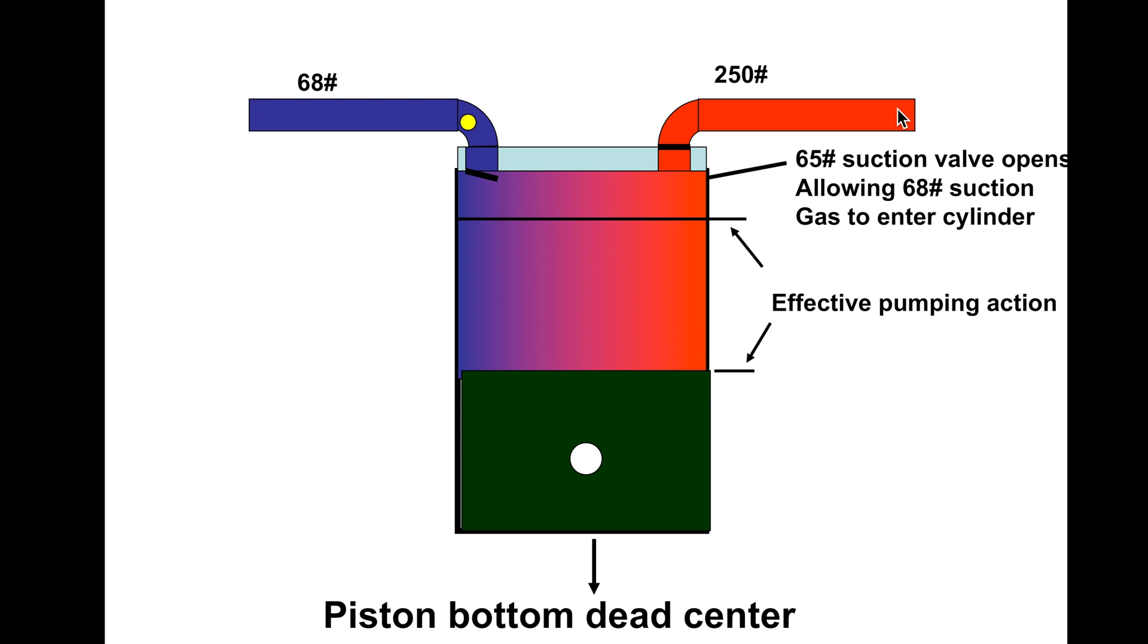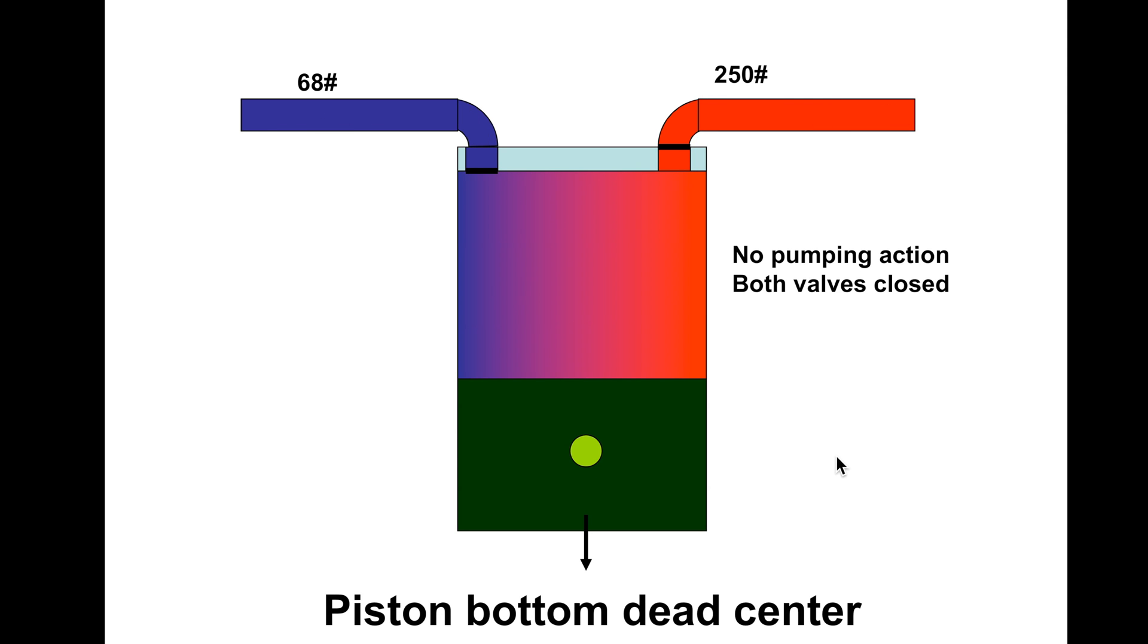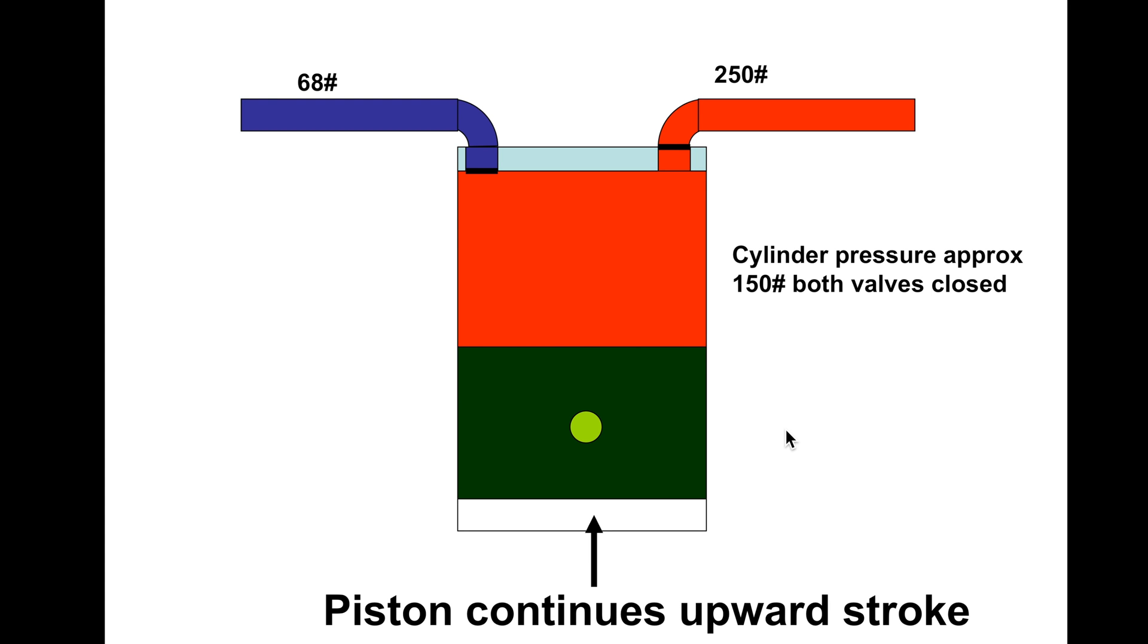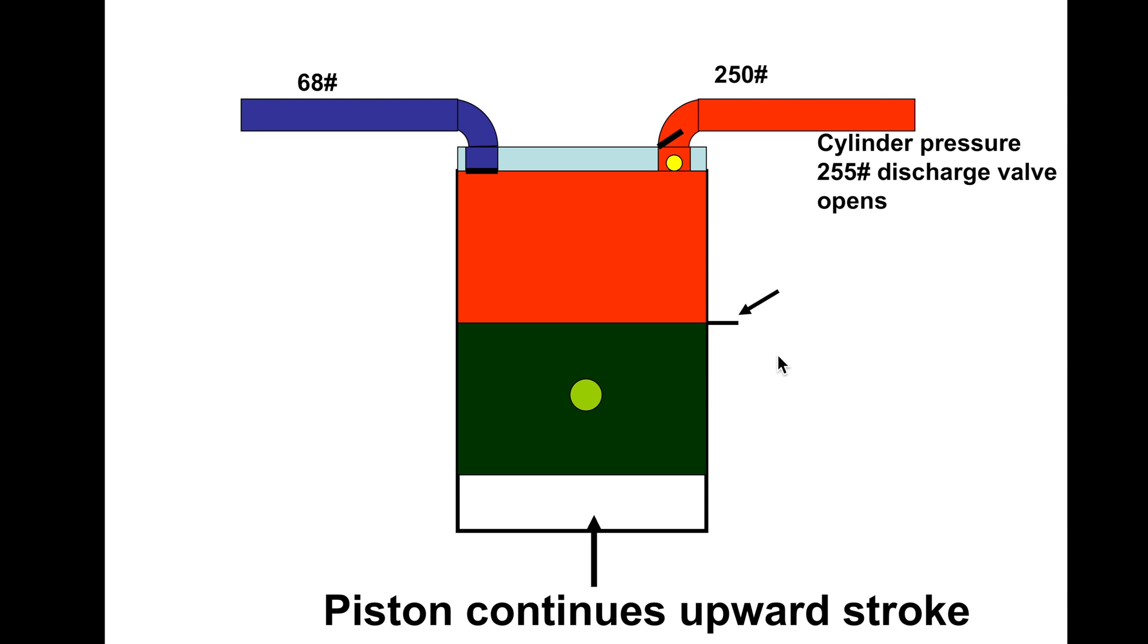Gas out. The discharge valves are closed. The cylinder pressure is 68 pounds. Now as it goes up at 150 pounds, nothing's happening because it's got to get over the 250. We get up to 255, piston's up a little bit farther.